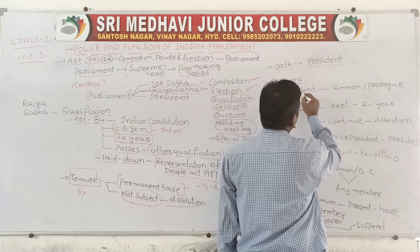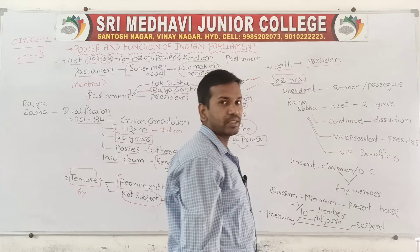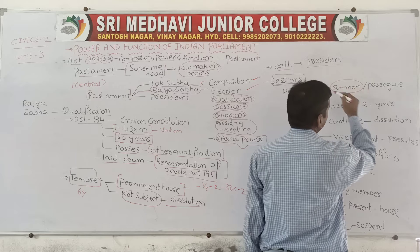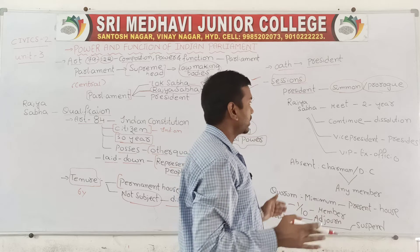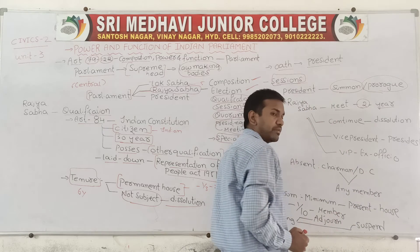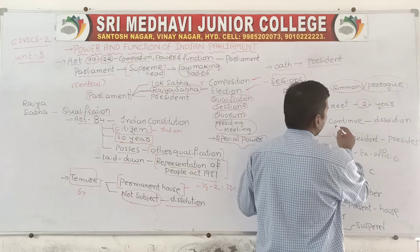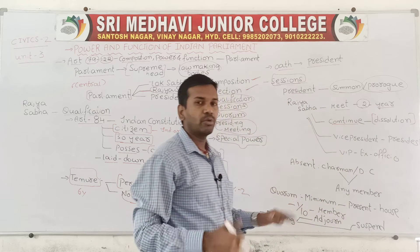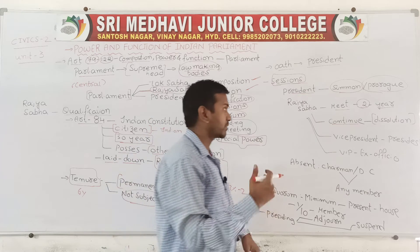Sessions are nothing but meetings. For both Lok Sabha and Rajya Sabha, the President presides over — he summons, starts, and ends the meeting. For Rajya Sabha specifically, the meetings are conducted 2 times per year. Rajya Sabha will continue but will not dissolve. Unlike Lok Sabha where all members are dissolved after 5 years, Rajya Sabha members are not dissolved after 6 years.